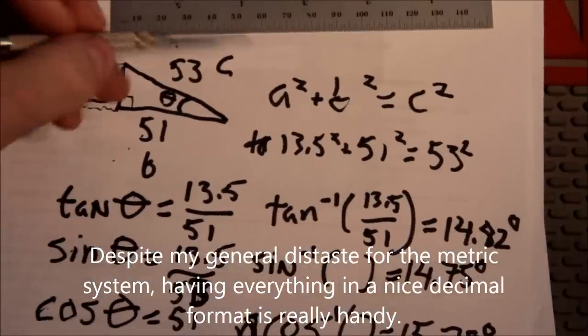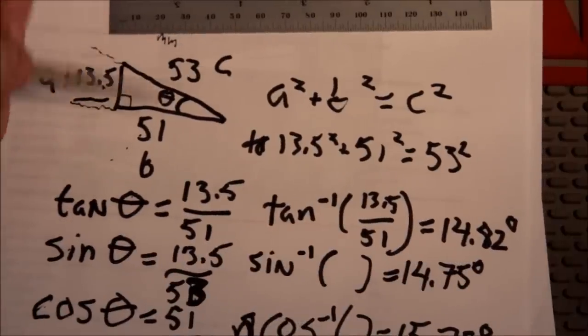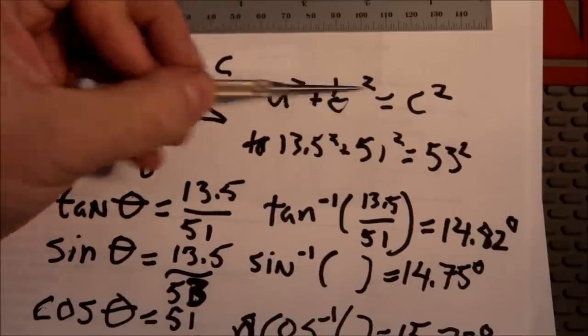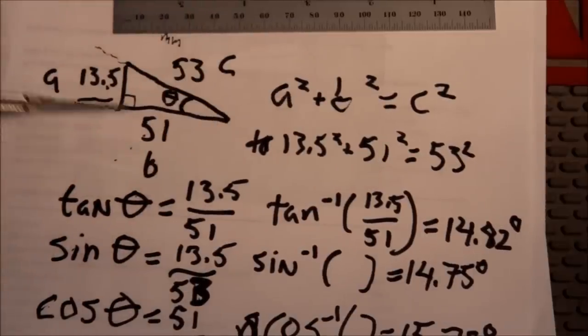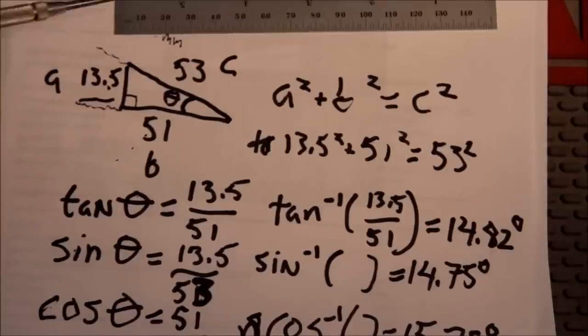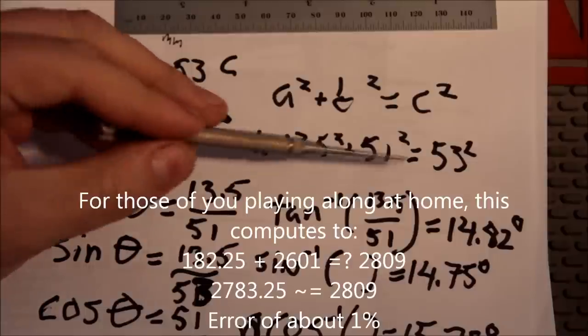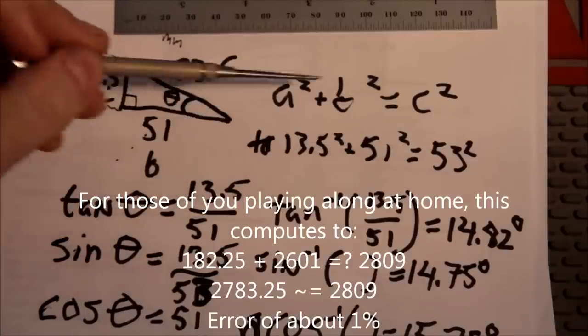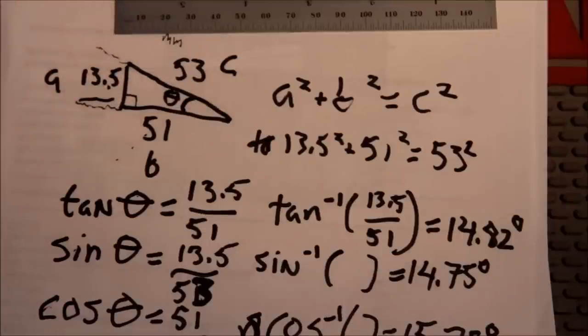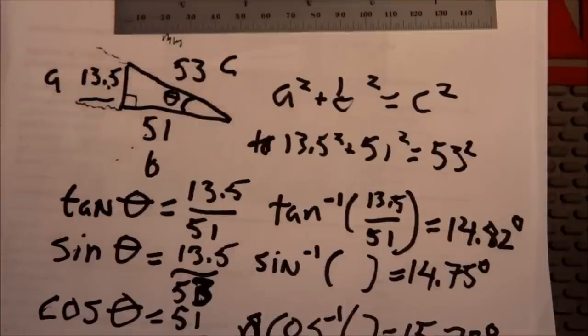The first thing I did was I wanted to make sure that these numbers made sense, that I hadn't measured something wrong. So I used the Pythagorean theorem, a squared plus b squared equals c squared. So the two sides, the sum of the squares of the two sides should be equal to the square of the hypotenuse. That gives you this formula. And it turns out I was within 20 or 30 there. So I considered that close enough for my purposes.